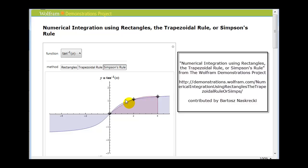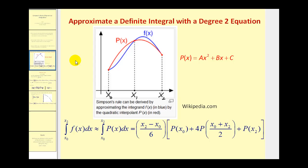Let's go ahead and try to develop the idea of Simpson's Rule. We see the function in blue, and in red we have a parabola through three points spanning two intervals from x sub zero to x sub two. What we're saying is that the definite integral of the function is approximately equal to the definite integral of p of x, which is this quadratic function. If we integrate ax squared plus bx plus c with respect to x from x sub zero to x sub two, we can show it equals all of the expression shown.